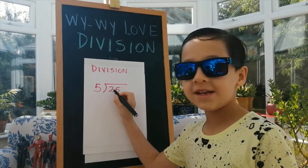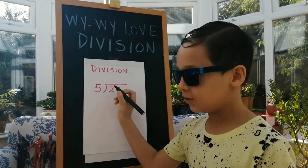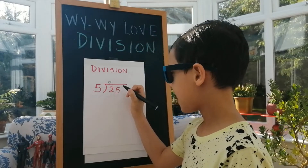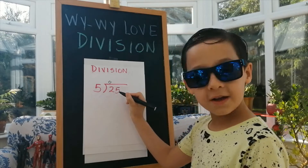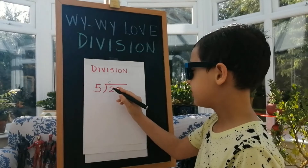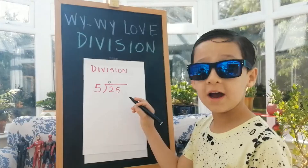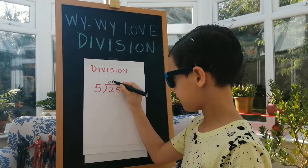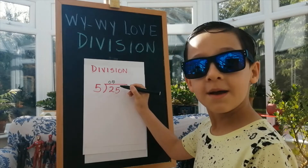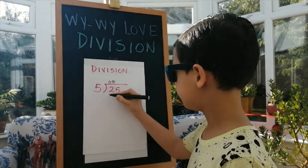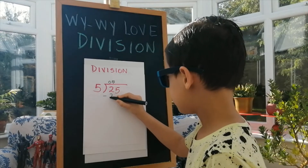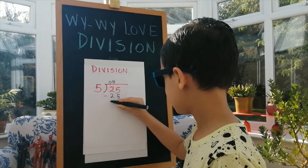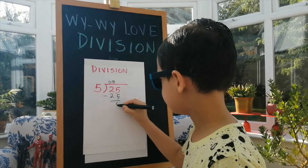How many 5's are in 2? Zero. And how many times 5 goes into 25? 5 times 5 is 25, minus 25 equals 0.